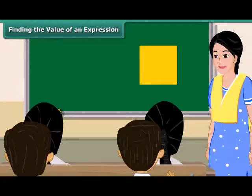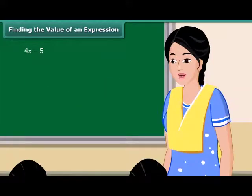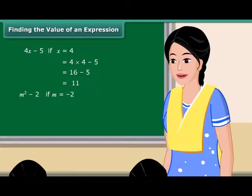See this square? It has an area equal to L squared. If the value of L is equal to 4 cm, then what would be the area of this square? That's right, it would be 16 cm squared. So children, there are a number of situations in which we need to find the value of an expression. Consider the expression 4x minus 5. If the value of x is equal to 4, then the given algebraic expression is equal to 4 into 4 minus 5, which is equal to 16 minus 5, that is 11. Similarly, if m is equal to minus 2, then value of the expression m squared minus 2 will be equal to 2.